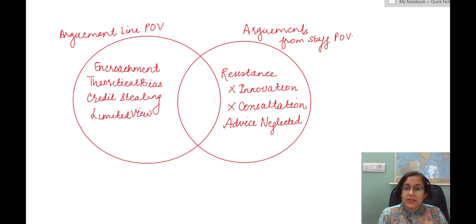Now what the staff authority says? It says that it faces resistance from the line authority. There is no innovation, there is no consultation and if at all they are giving the advice, it is often neglected. So once you have enumerated all the arguments from each party's side, now you want to tell the examiner that you know what the conflict is and how you can resolve it.